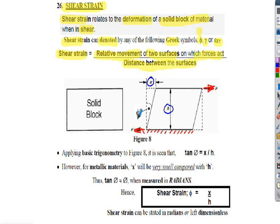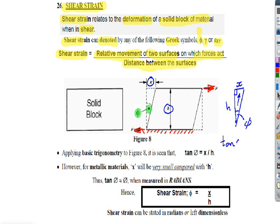It should be noted that shear strain is actually a rotation — it's an angular movement. If I draw a right angle triangle away from the main shape, this is angle phi. This would be the height H — that's one side of the triangle — and this would be side X, which is the opposite side. The adjacent side brings us back to our SOHCAHTOA. So from basic trig, tan of angle phi equals the opposite side X over the height H. To find phi we would have to take the inverse tan of both sides.